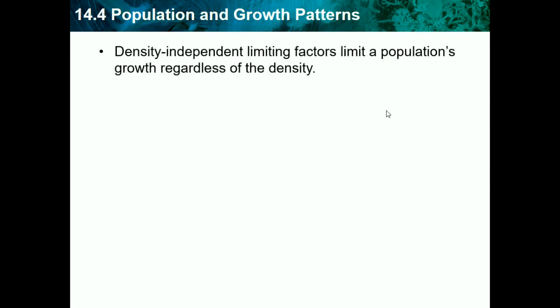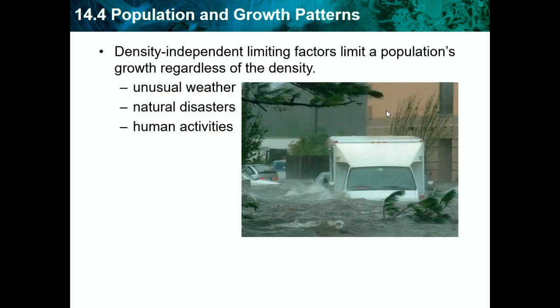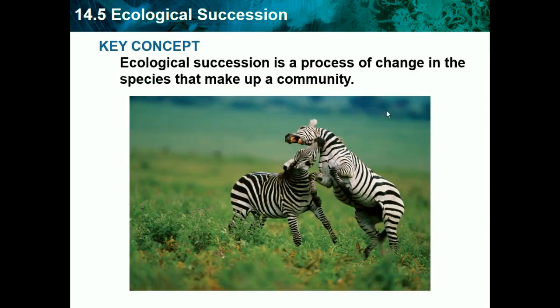Density-independent limiting factors limit population growth regardless of density. These include unusual weather, natural disasters, and human activities. These factors are not related to how many individuals are present — weather doesn't consider population size before occurring, and human activities affect ecosystems regardless of animal population numbers.